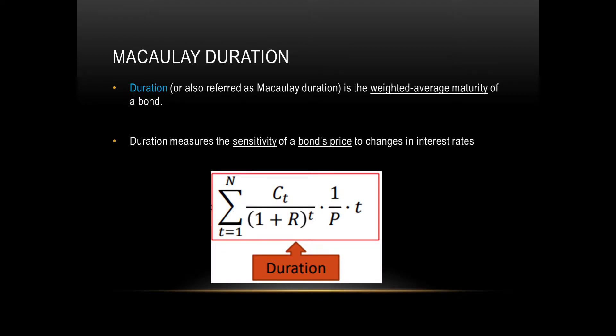Let's quickly go over what duration is. Duration, also referred to as Macaulay duration, is the weighted average maturity of a bond. What it measures is the sensitivity of a bond's price to changes in interest rates. It doesn't necessarily have to be a bond's price but just any security, but we'll be using bonds in our examples.